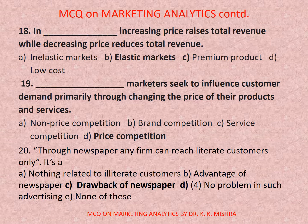Question number nineteen: Dash marketers seek to influence customer demand primarily through changing the price of products and services. Options are: a) non-price competition, b) brand competition, c) service competition, d) price competition. Correct option is d) price competition. Question number twenty: Through newspaper, any firm can reach literate customers only. Options are: a) nothing related to illiterate customers, b) advantage of newspaper, c) drawback of newspaper, d) no problem in such advertising, e) none of the above. Correct option is c) drawback of newspaper.